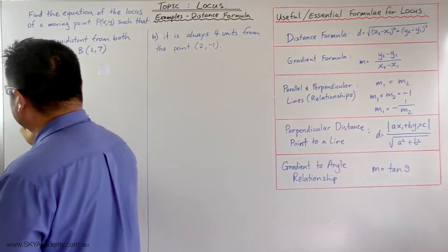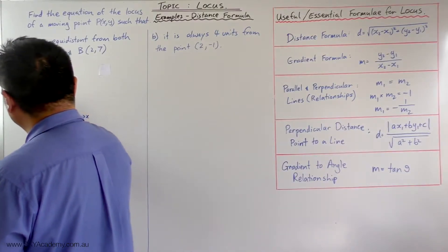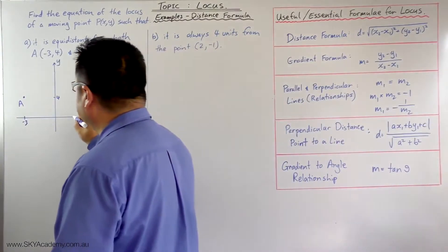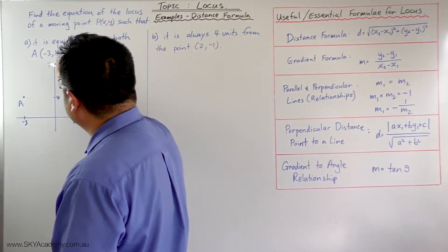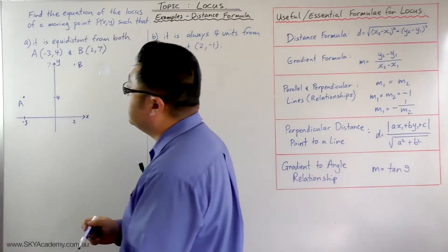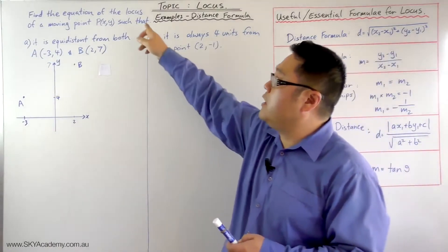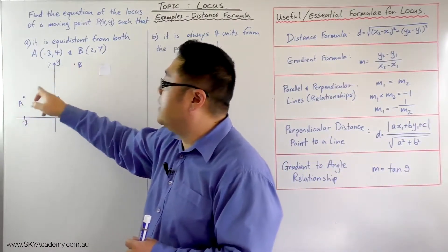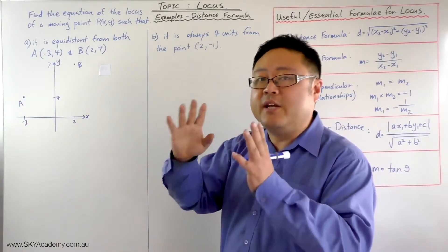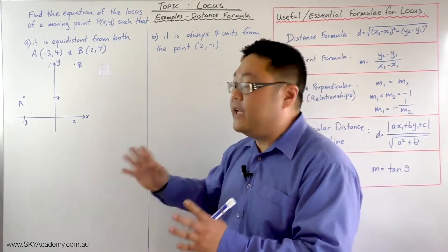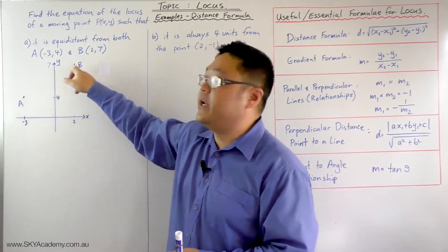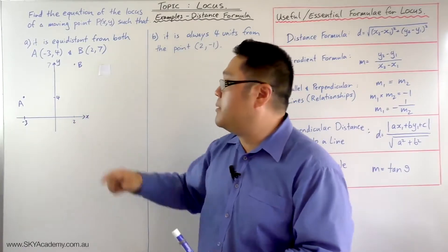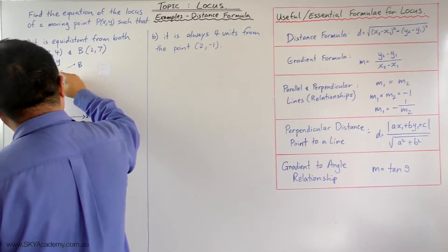So (-3, 4): minus 3 is here, 4 would be there — that's point A. And then we've got point B, which is (2, 7) — 2 here and 7 up here, let's call that point B. Now there is an obvious point that will fit in that locus: the midpoint between A and B, because at the midpoint the distance between A and P is going to equal the distance between P and B. So a good place to start would be the midpoint, which is P.